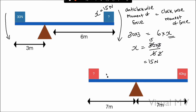Anti-clockwise moment equals clockwise moment of force. In the next case, the mass is 40 kilogram. Looking at the distances, both sides are 7 meters — the distances are equal. So there is no need to calculate; the answer is directly 40 kilogram.